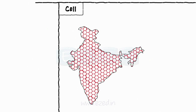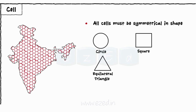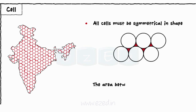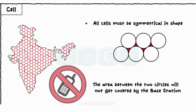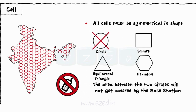As the city is geographically divided into small cells, it is mandatory that all cells must be symmetrical in shape. Based on this, we have four geometrical shapes such as circle, square, equilateral triangle, and hexagon. If we select the shape of a cell as a circle, then the area between the two circles will not get covered by the base station, and any attempt of communication from that area will fail. Thus, we eliminate the circular shape.